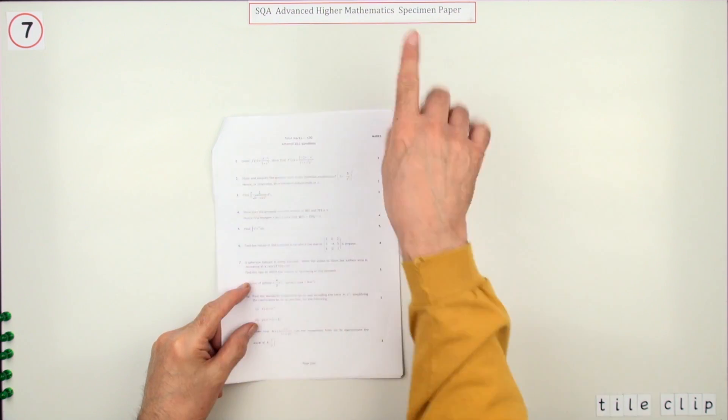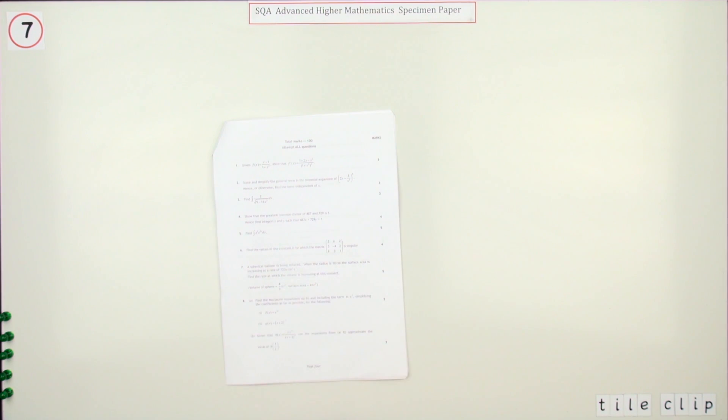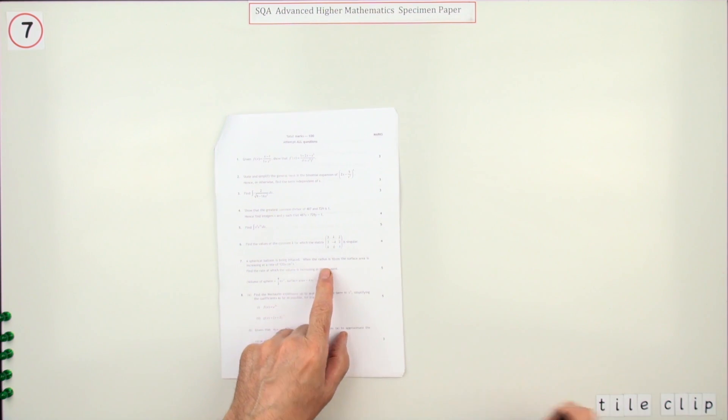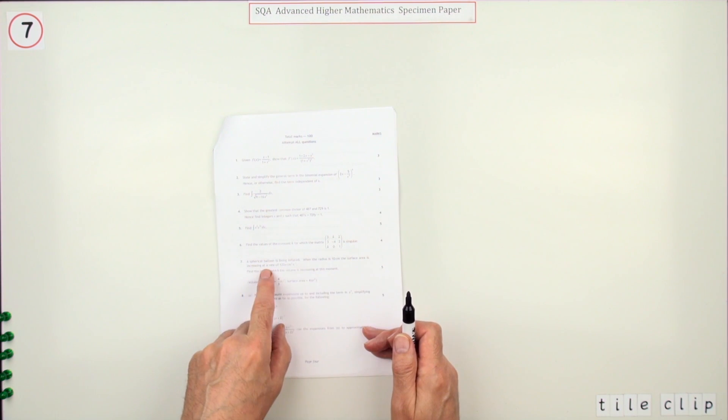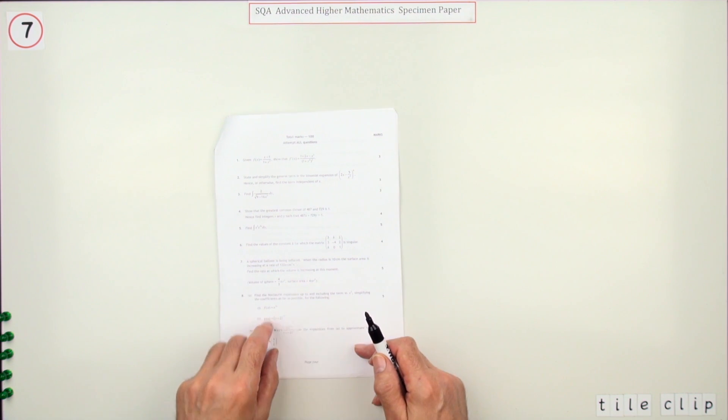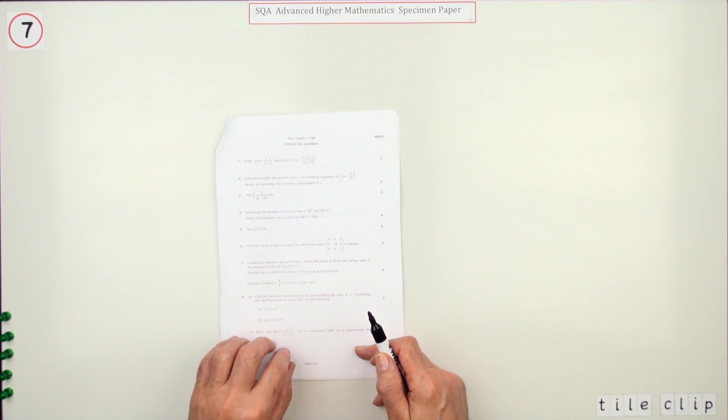Number seven from the specimen paper for five marks. This is a related rates problem. You've got a spherical balloon - it gives you the radius and tells you the surface area is increasing, which means dA/dt. You have to find the rate at which the volume is increasing.